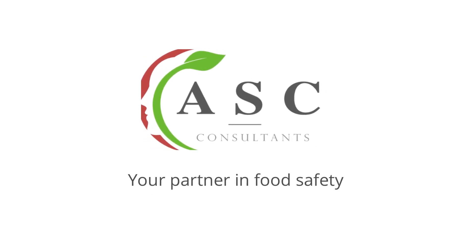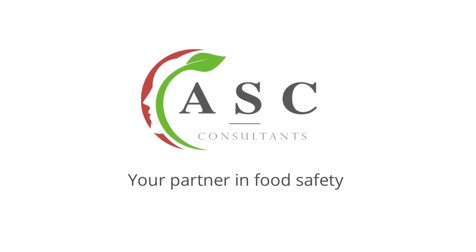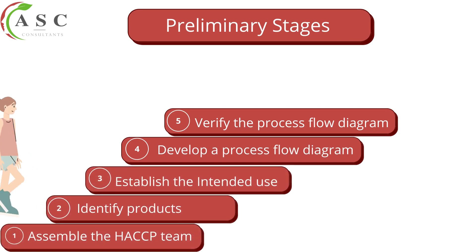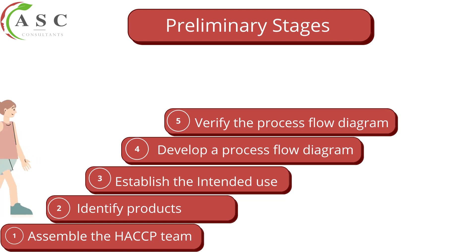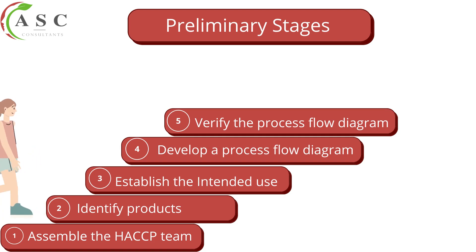In this lesson we are going to be looking at the first five stages of HACCP. As we know, HACCP consists of 12 stages. The first five are called preliminary stages and the last seven are called the seven HACCP principles. The first is assembling the HACCP team, the second is identification of products or product description, the third is establishment of the intended use, the fourth is development of a process flow diagram, and the fifth is verification of the process flow diagram on site.